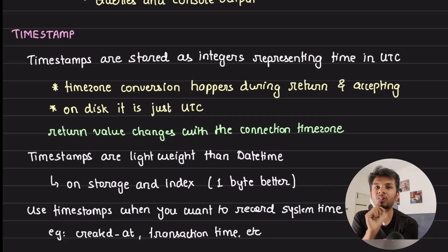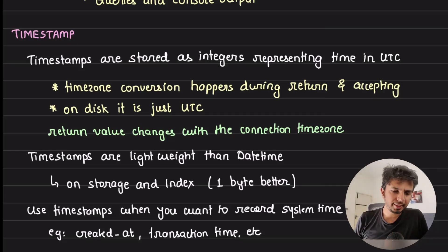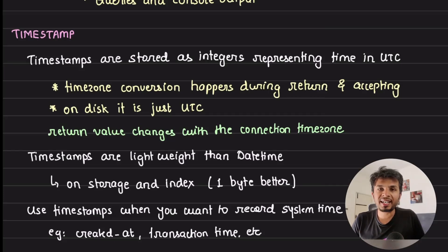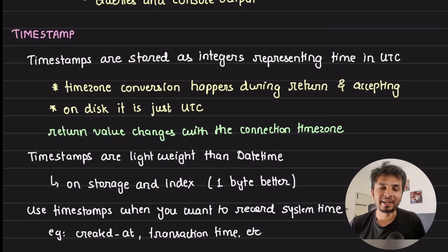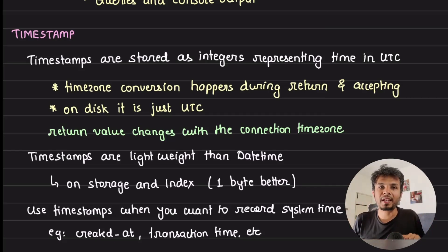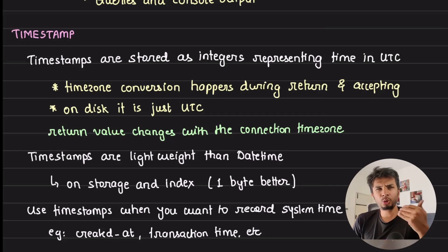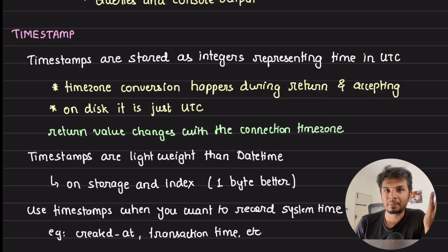Be aware that the value you see can change depending on the time zone of the connection — so if your application works with multiple time zones, the timestamp value can be affected. Regarding storage: before MySQL 5.6.4, datetime used to take up eight bytes versus timestamp's four bytes — a 2x difference. Now in current MySQL it's five bytes for datetime versus four bytes for timestamp, so just one byte better.